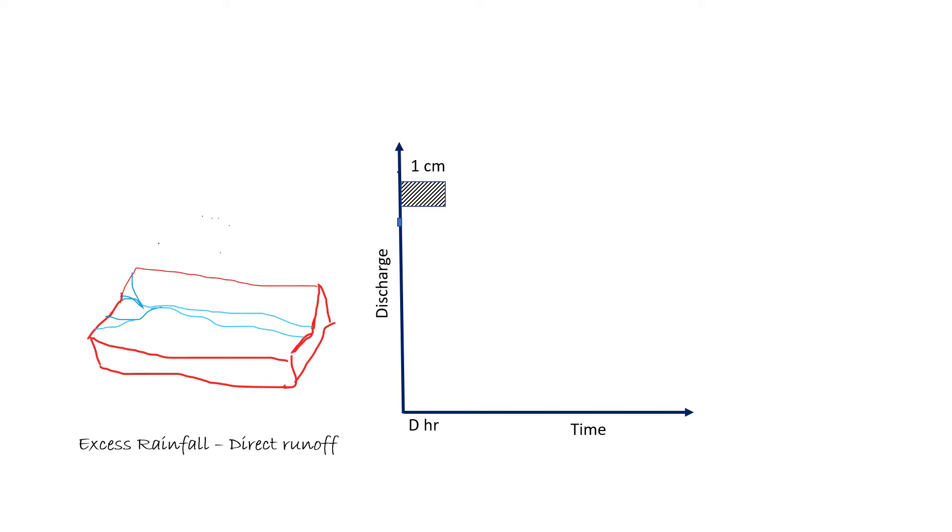Unit hydrograph is a direct runoff hydrograph resulting from unit depth of rainfall excess occurring uniformly over a catchment area and at a uniform rate for a specified duration. This is a unit hydrograph where rainfall excess means direct runoff, which means total rainfall minus losses such as infiltration and initial losses.